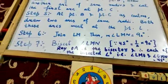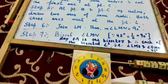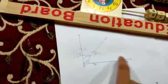So this is the step 7 bisected angle LMN. Angle LMN ko ham nae bisect kiya.